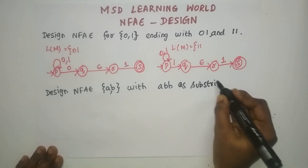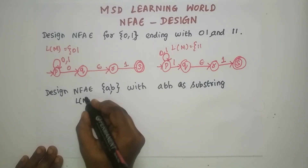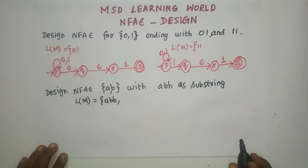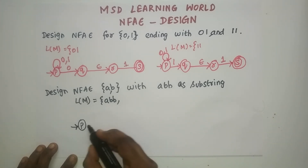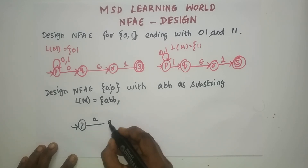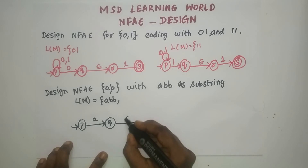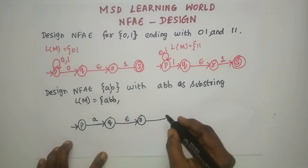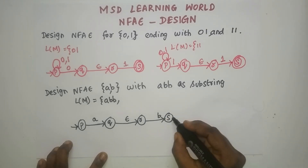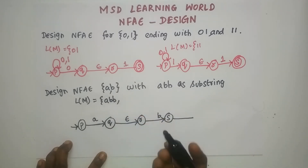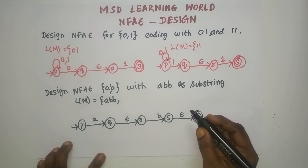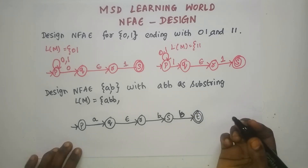For this problem, the minimum language is A,B,B. We need to first create the machine and determine the total number of states. Let P be the initial state. From P to Q, have a transition for A. You can place an Epsilon transition anywhere, so from Q to R, have one Epsilon transition. From R to S, have a transition for B. You can also have an Epsilon transition between the two B's if needed, or directly go to a final state with a transition for B.